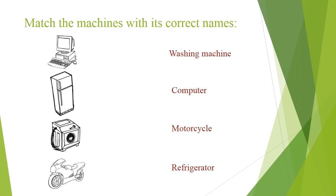Match the machine with its correct names. In this activity, we have pictures of machines in one column and names in another column. What do we need to do? Identify what name matches each machine. Number one is Washing Machine, number two is Computer, number three is Motorcycle, and number four is Refrigerator.